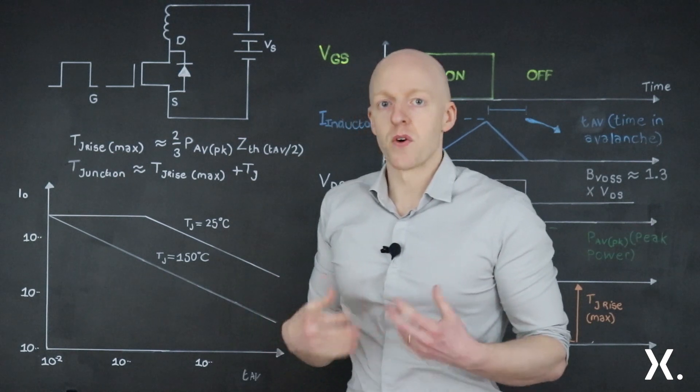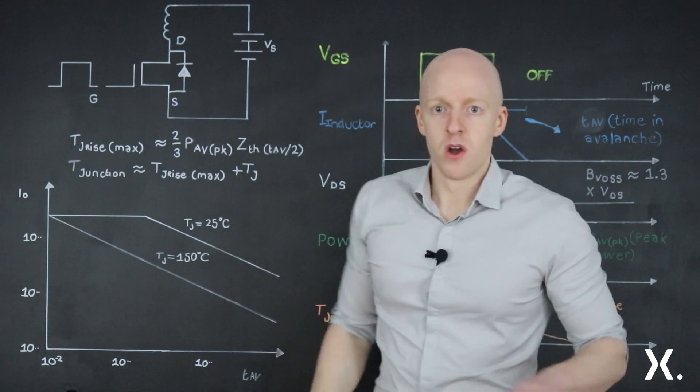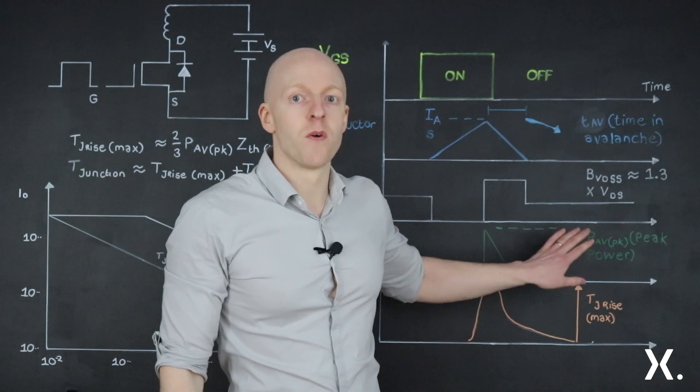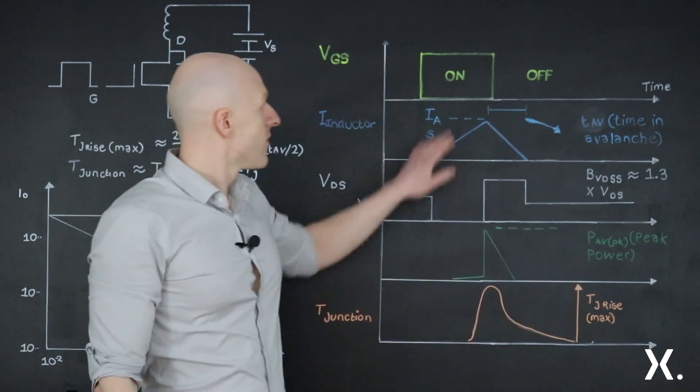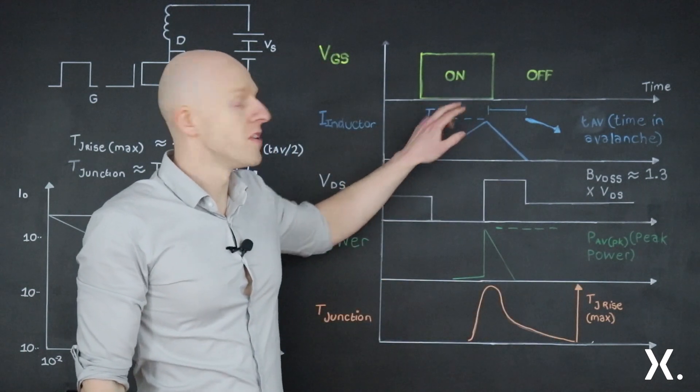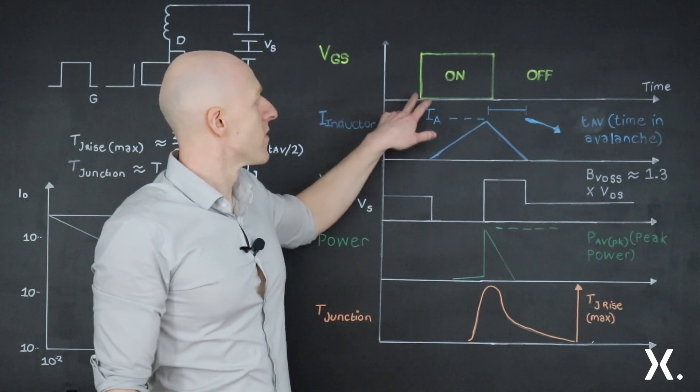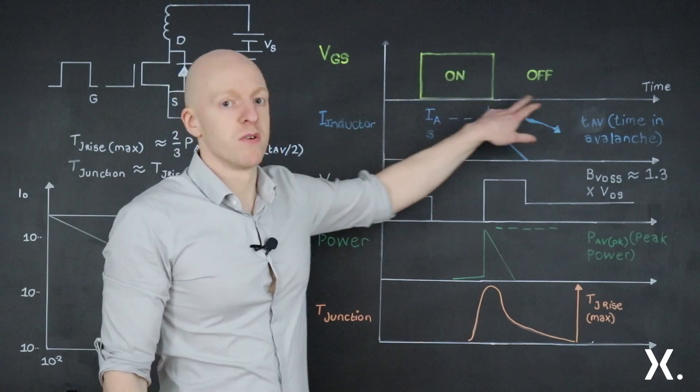Now to look into a bit more detail of what's happening during avalanche operation, we've got some typical waveforms here. So we'll start off with the gate source voltage, very simple. We're turning the MOSFET on with a gate source voltage, then we're turning it off.